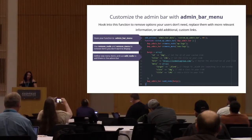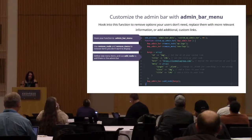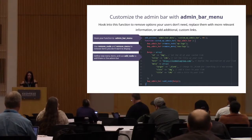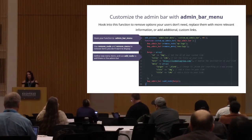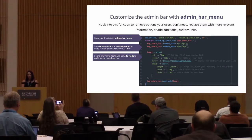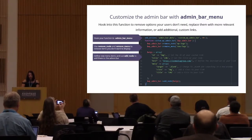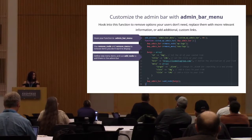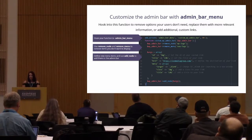All of the admin bar modifications go with the admin_bar_menu function. We hook into admin_bar_menu, then use remove_node and remove_menu to remove things. In this example, I use remove_node to remove the WordPress logo in the top left, and remove_menu to remove one of the options that show up in the New dropdown. Then I use add_node to add a new menu option, which is a custom link. You can specify the ID, title, and the target so it opens in a new window. You can also add a class to add branding.